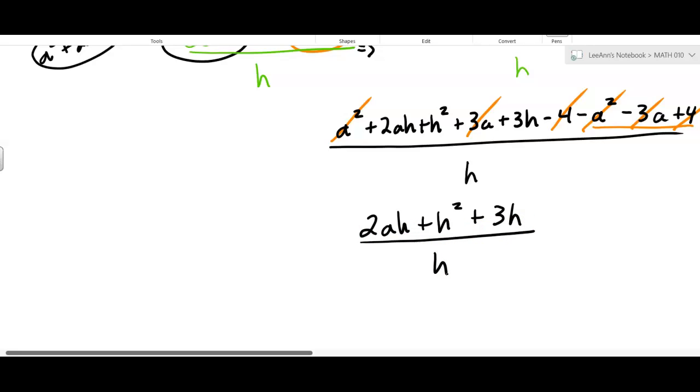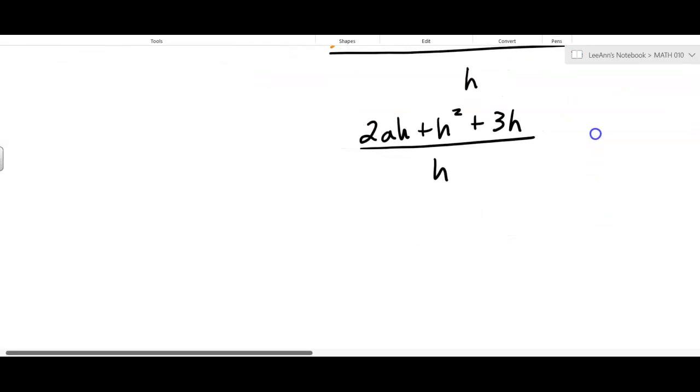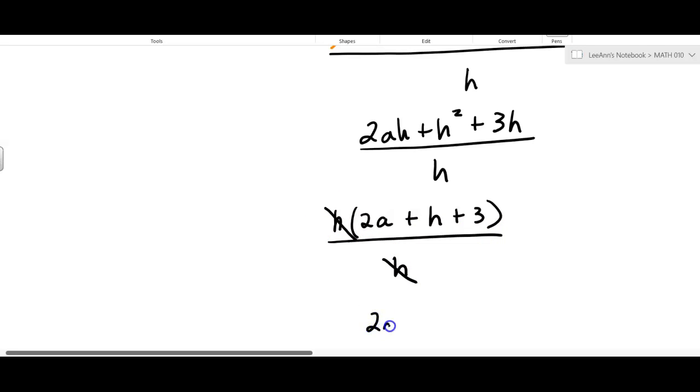There's a little bit more that we can do to simplify it. You can factor out an H in the numerator. And then that H cancels with that H. So the final answer is just 2A plus H plus 3.